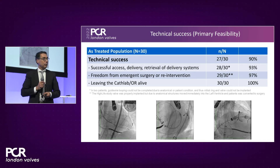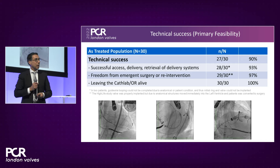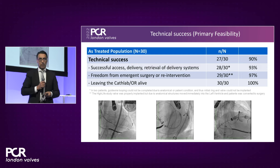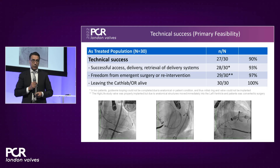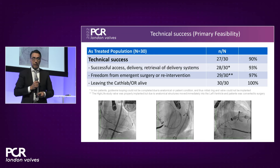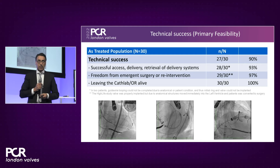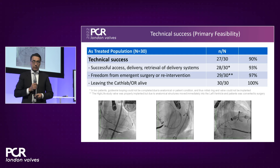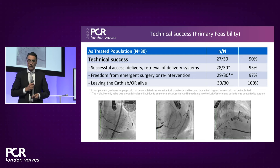In two patients the wire looping failed. In one patient, after successful implantation, the valve migrated into the ventricle and the patient had to be converted to surgery. All patients left the cath lab alive.